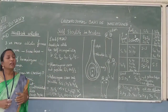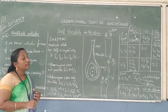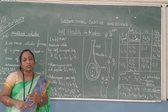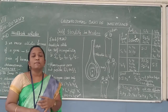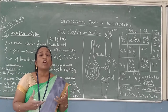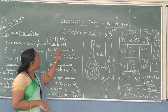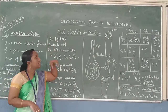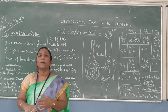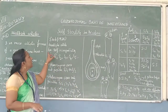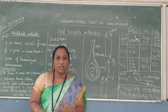Today we are going to learn the example of multiple alleles — specifically self-sterility in Nicotiana, a type of tobacco plant. What does sterility mean? It means the organism cannot produce any progeny. This self-sterility was first observed by East in 1925, and it is controlled by multiple alleles, denoted by the series S1, S2, S3, S4, S5, and so on.